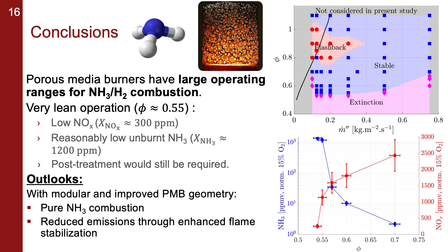To conclude, we have designed and demonstrated a porous media burner for ammonia-hydrogen combustion and have demonstrated that this burner is capable of operating over a large operating range. At very lean operation close to an equivalence ratio of 0.55, the burner has fairly low NOx emissions on the order of 200 to 300 ppm and reasonably low unburnt ammonia on the order of 1200 ppm. In practical applications, we would either need to further improve this type of burner or use some sort of post-treatment to install it in a practical system. Thank you for your attention and I welcome any questions.